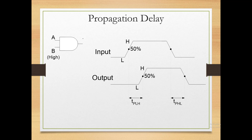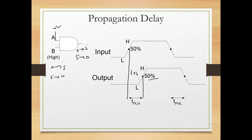For an AND gate example: if input A is at +5V and input B goes from 0 to high, output goes from 0 to 5V, and vice versa. When the input's 50% point (2.5V) is reached, we time until the output's 50% point — in this case 3 nanoseconds — giving TPLH = 3ns. Similarly for the high-to-low case, we get the TPHL. These are the propagation delays for logic high and logic low transitions.